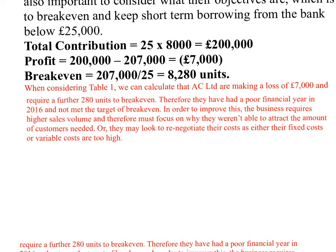My model paragraph reads: 'Considering table 1, we can calculate that AC Limited are making a loss of £7,000 and require a further 280 people to break even. Therefore they have had a poor financial year in 2016 and have not met the target of break even. In order to improve this, the business requires higher sales volume and must focus on why they were unable to attract the customers needed, or may look to renegotiate costs as either fixed or variable costs are currently too high.' By manipulating the data and considering the context of the objective, you're going to get the high-level marks.